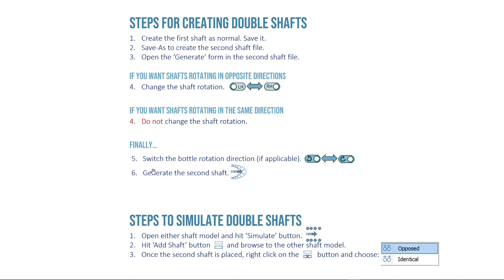Then, whether or not the shafts are rotating in opposite directions, you're going to switch the bottle rotation direction from one to the other — if it was clockwise, change it to anti-clockwise; if it was anti-clockwise, change it to clockwise. That's only if you have bottle rotation. If you don't, you can skip that step altogether. Then just hit generate on the second shaft. Those are the six steps — very straightforward.